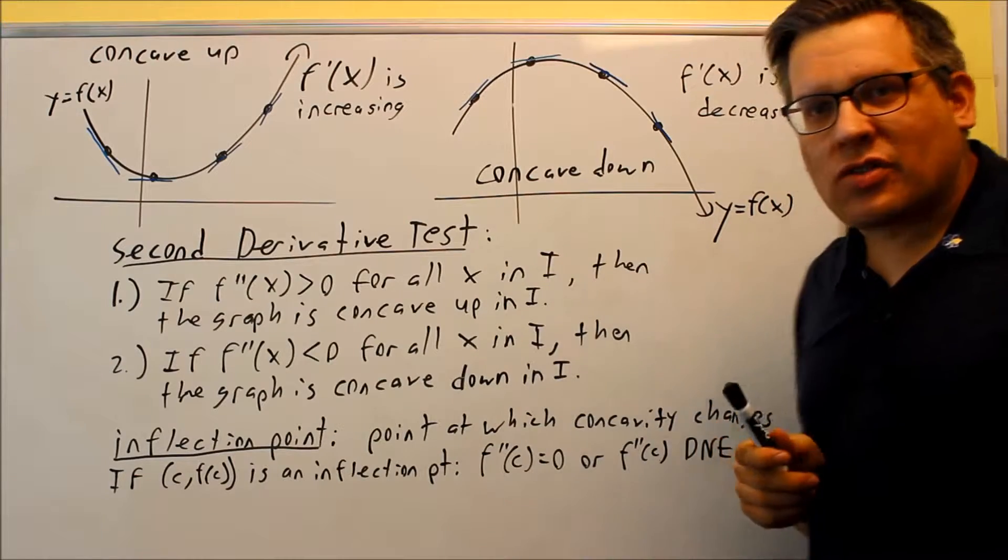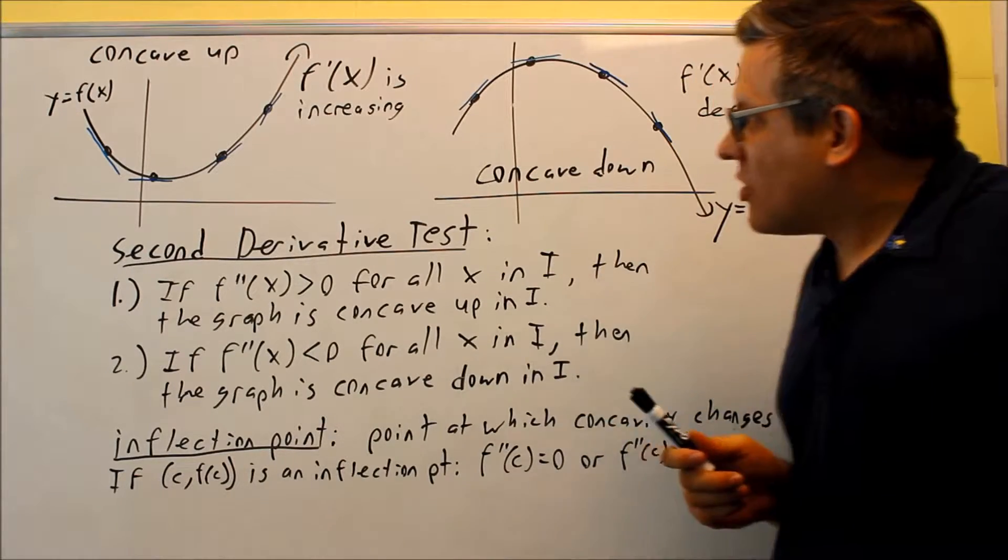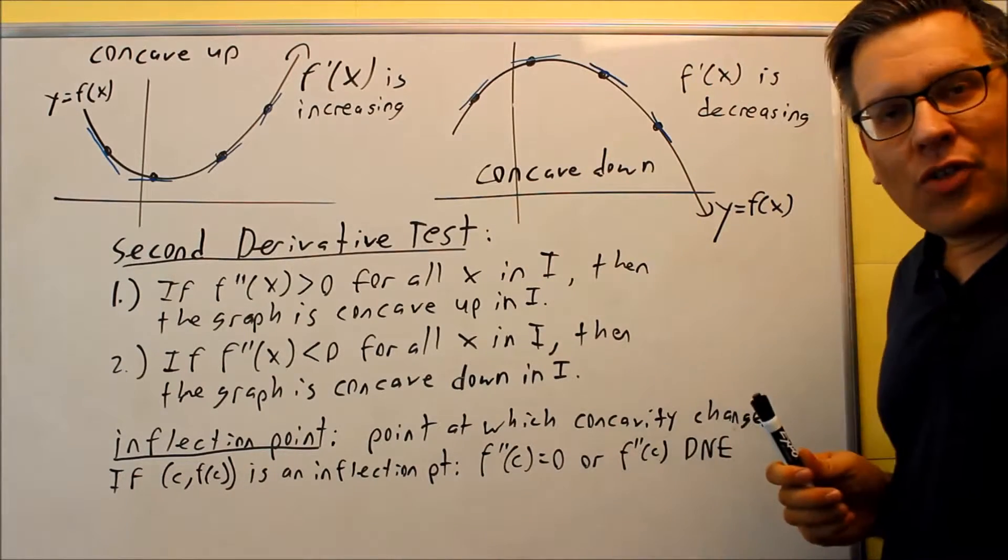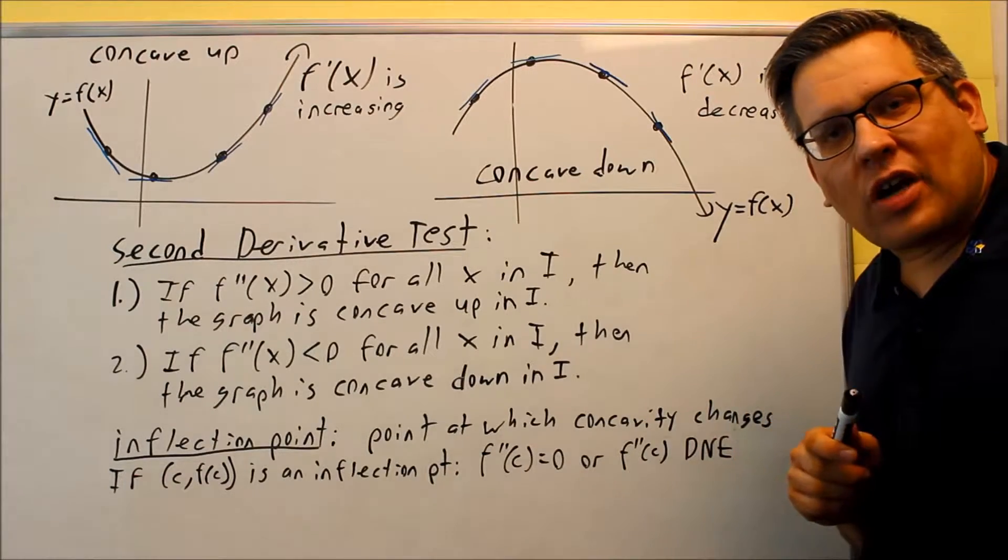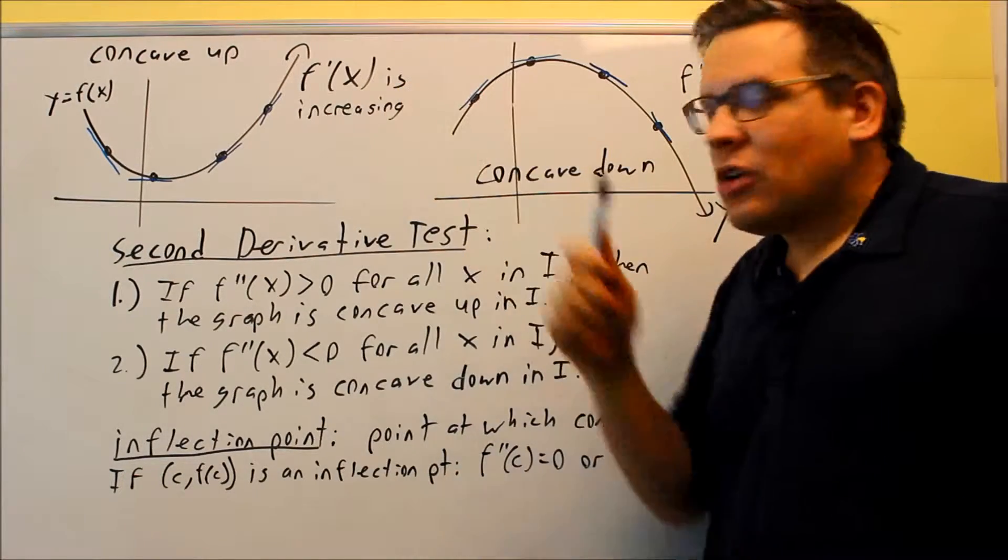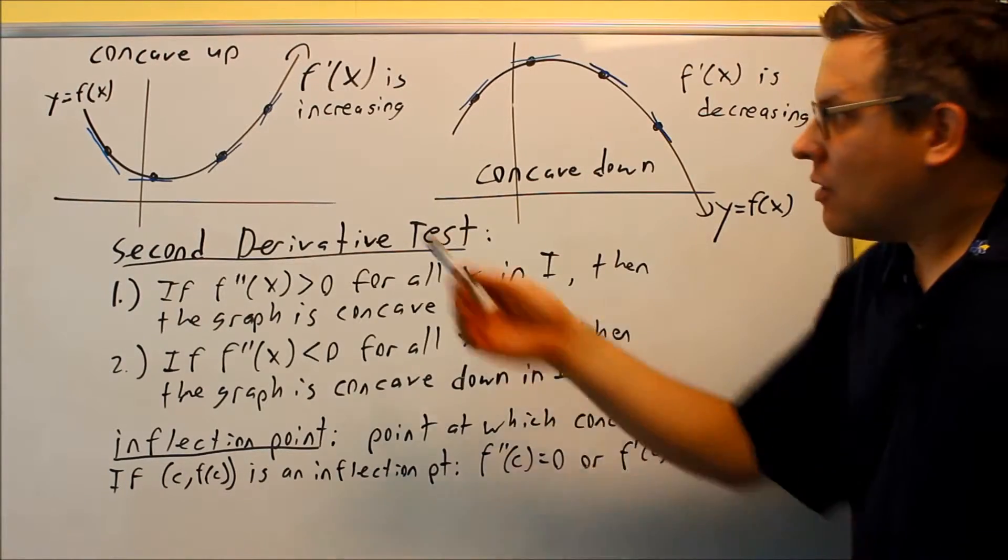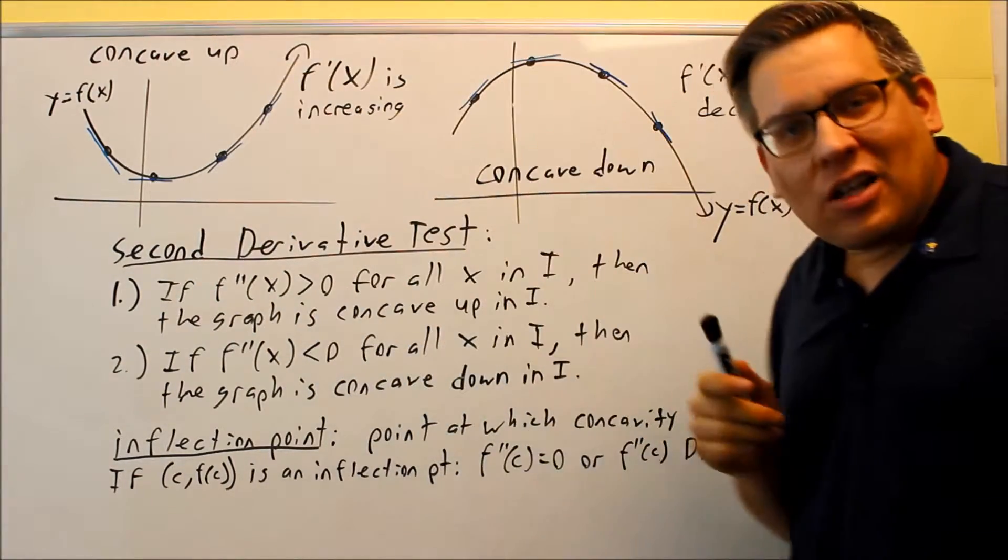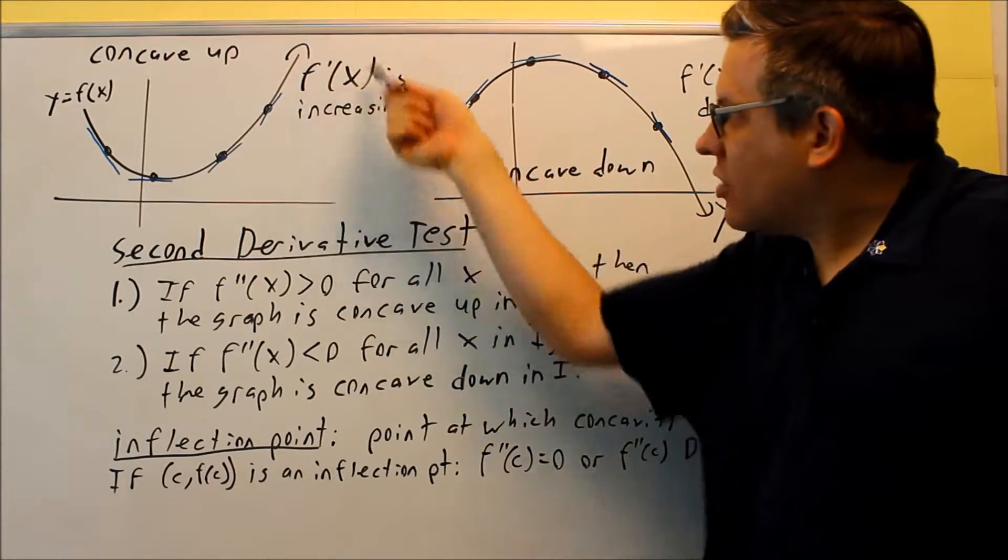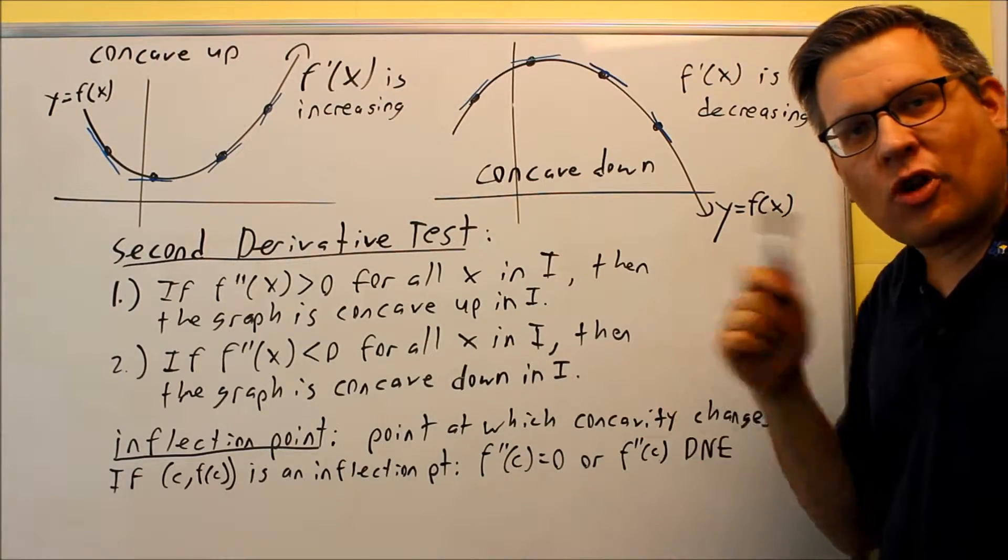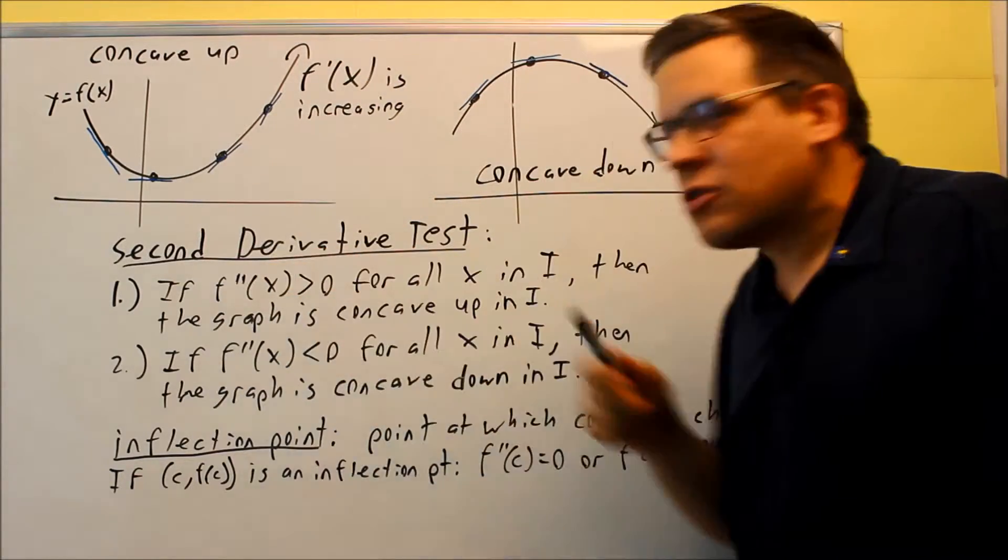Now what the second derivative test does is it analyzes the slope of the first derivative. Remember the first derivative test said that if the first derivative was greater than zero that means that the original function is going to be increasing. Well if you're analyzing the slope of a first derivative, the slope of the first derivative is now the second derivative.